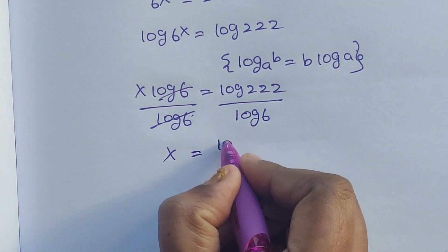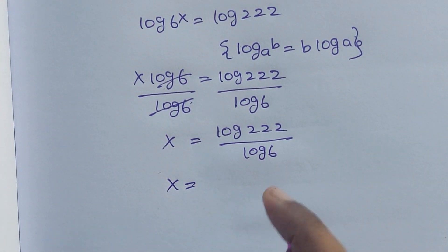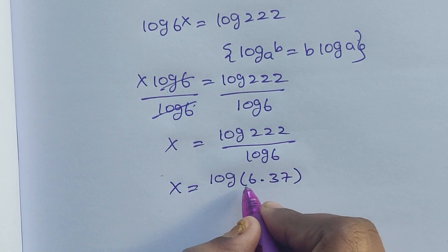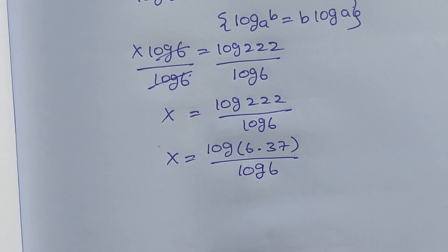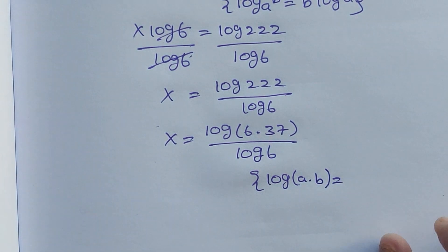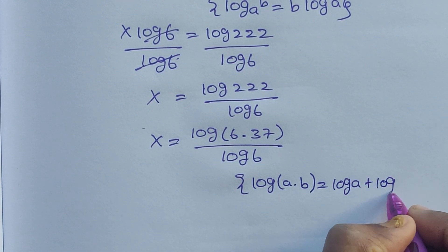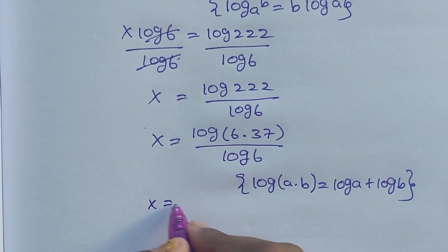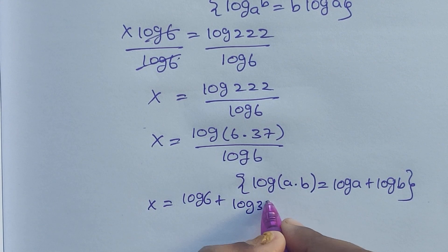We can write 222 as log of six times 37, because six times 37 equals 222. So I'm writing log of (6 × 37) divided by log six. Now I'm going to apply one more formula: log a times b equals log a plus log b. Applying this formula gives x equal to log six plus log 37, all divided by log six.